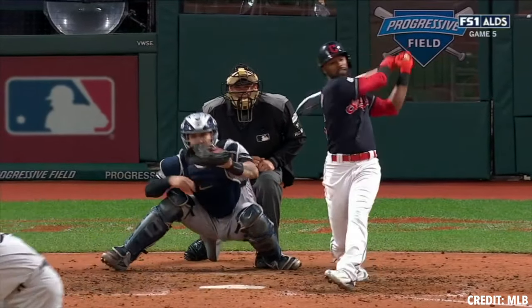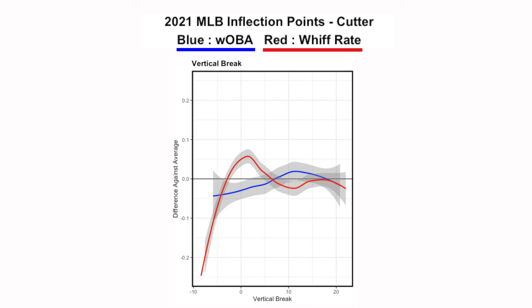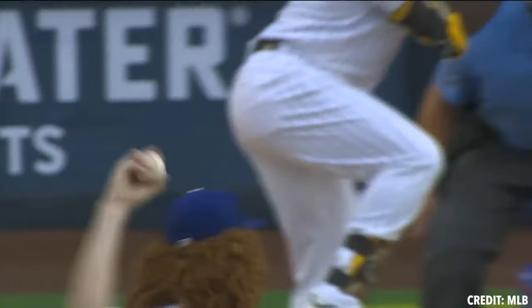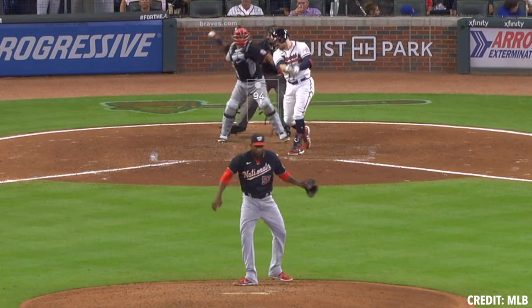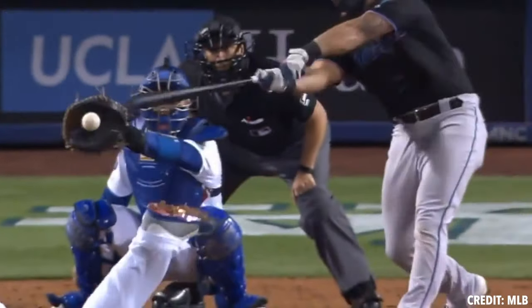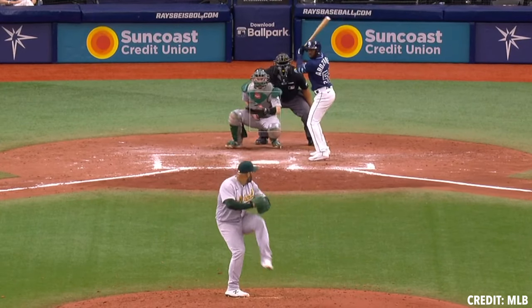Looking at vertical break — in general, you're going to see cutters be above the zero line, otherwise we get into the argument about labeling them a slider. What we want to take away is you want to keep the vertical break around 10 or less. If it's a low three-quarter guy, that number might be a bit lower, or if it's a guy from a super high slot coming off a 22-inch fastball, his vertical break might be getting closer to 10. It's respective of their arsenal and how those things project.